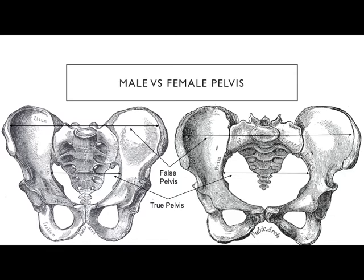We have true pelvis and false pelvis. The false pelvis spans from iliac crest to iliac crest — the distance you feel when you put your hands on your hips. The true pelvis is within the pelvic inlet — a much smaller, deeper opening. Below the pelvic inlet is the pelvic outlet.